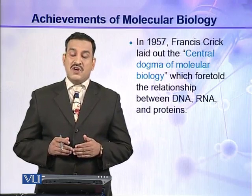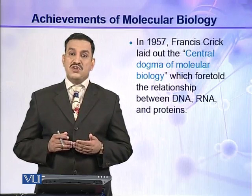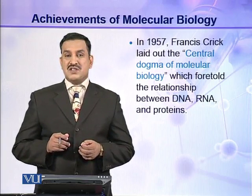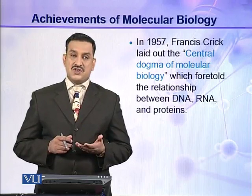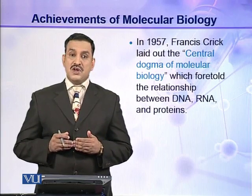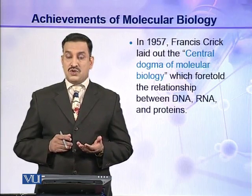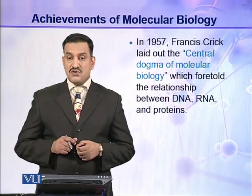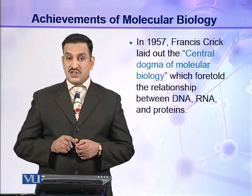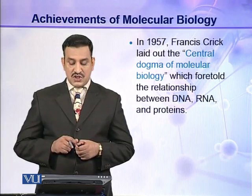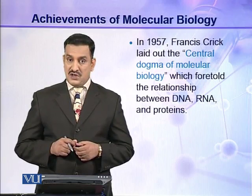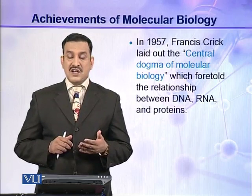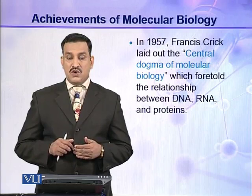Once molecular biology was born and new discoveries were being made, the key question was how DNA is expressed — how it transfers its information in the form of proteins. This problem was solved in 1957 by Francis Crick, who laid out the central dogma of molecular biology. This central dogma described the relationship between DNA, RNA, and protein.